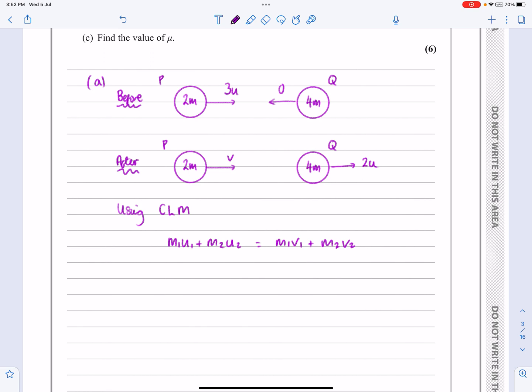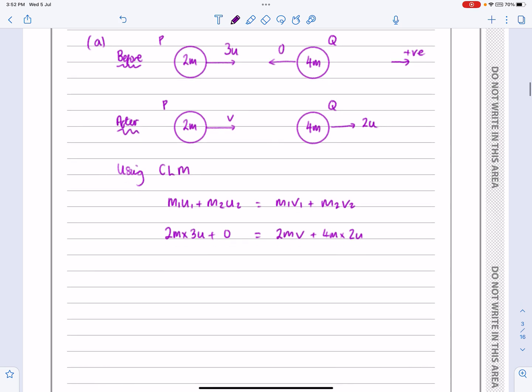Once I've done that, I'm going to take one of the directions as positive. I'm going to take this way as positive. That's virtually everything going in that direction, and I can just plug everything in. So I've got 2M times 3U, plus 4M times nothing - you can put 4M times nothing, you can put just zero, you can leave it blank, but I'm going to do that - equals 2M times my V here that I'm trying to work out, plus 4M times 2U. So let's rearrange this all now.